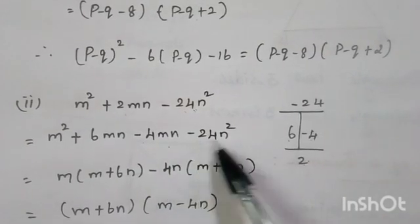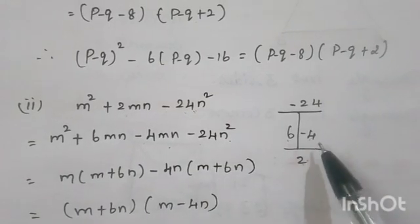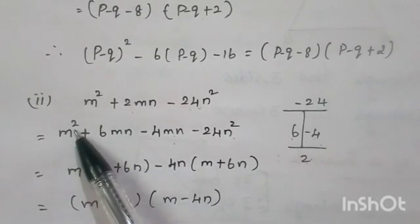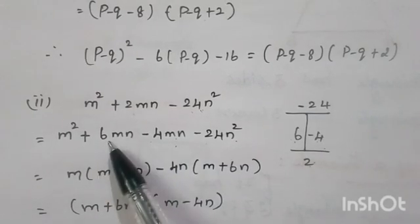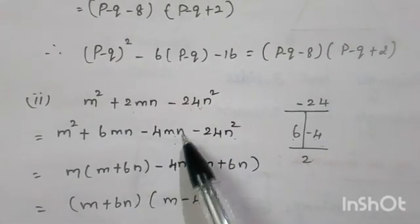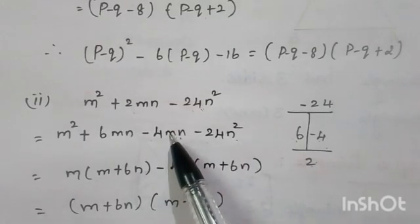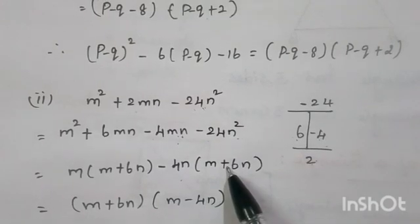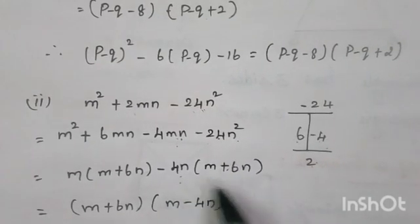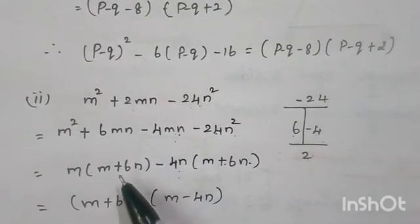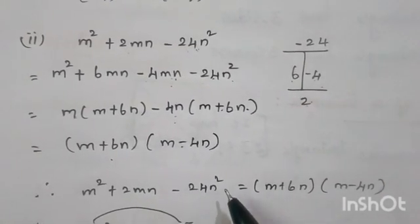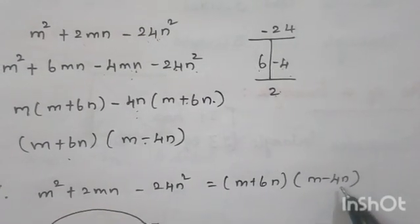Now rewrite as m square plus 6mn minus 4mn minus 24n square. Group the first two terms: m is common, take outside, leaving m plus 6n. So m(m plus 6n). For the last two terms, take minus 4n outside, leaving m plus 6n. So minus 4n(m plus 6n). Therefore m square plus 2mn minus 24n square equals (m plus 6n)(m minus 4n).